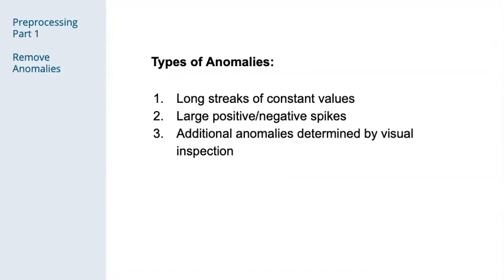Now I'll go over our pre-processing methods. This was one of our most important steps, and so I'll spend some time detailing our approach. First, we detected and filtered out three different types of anomalies. This figure shows long streaks of zeros, large spikes, and other anomalies that don't fit into either one of the first two cases.